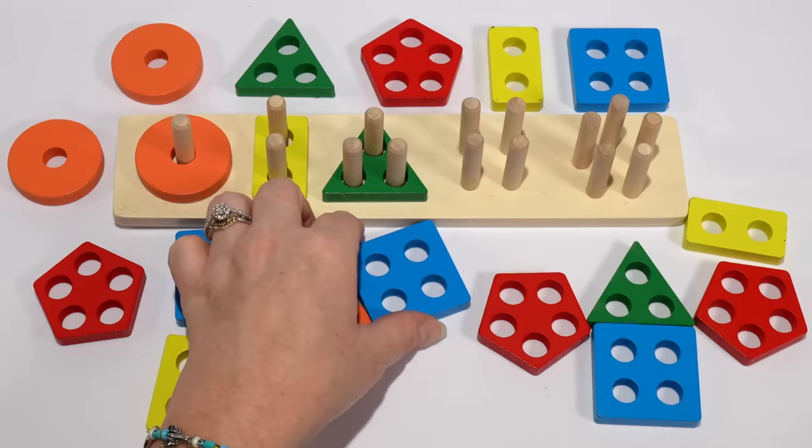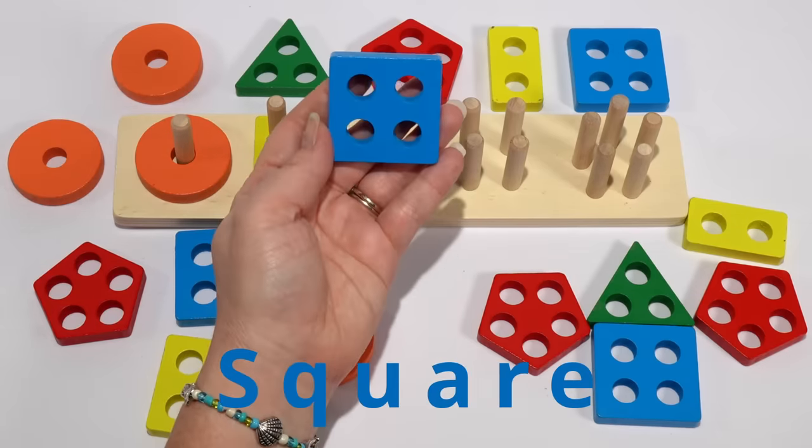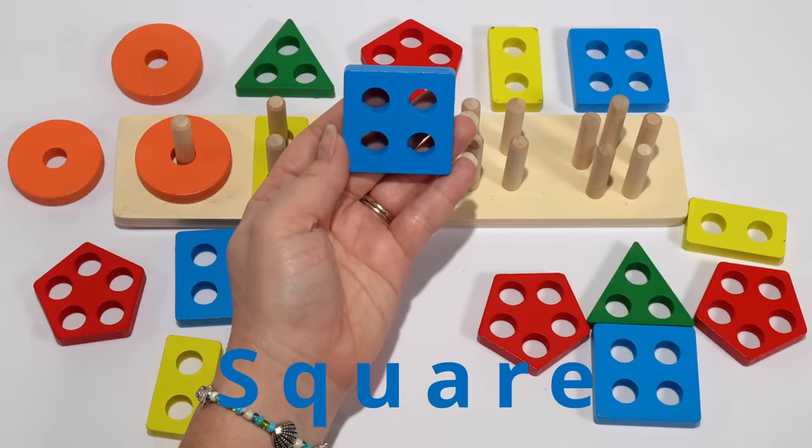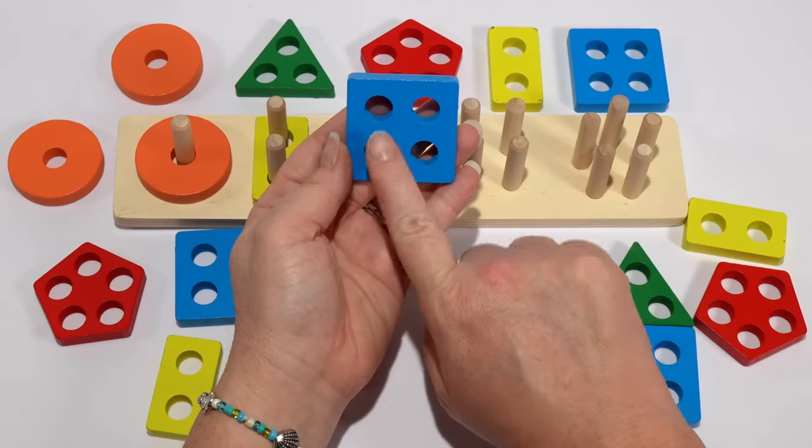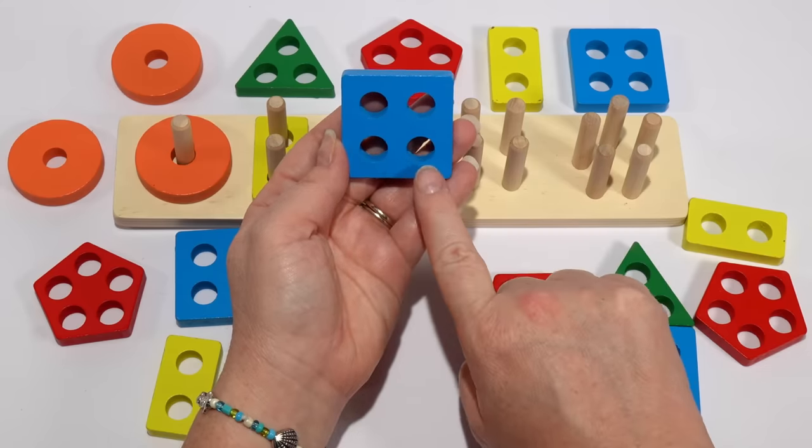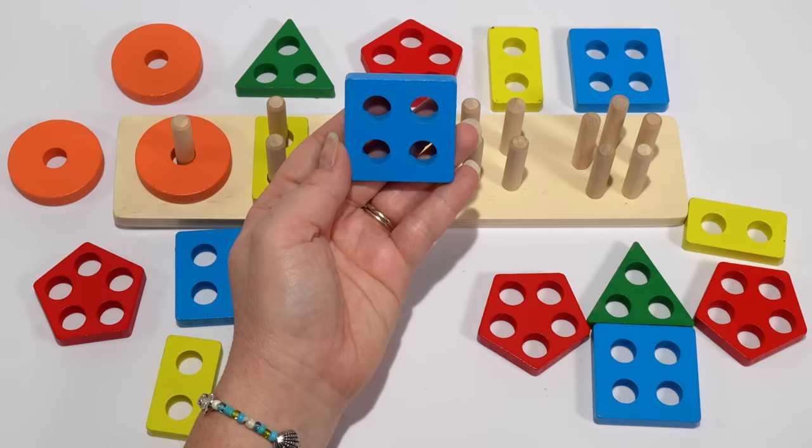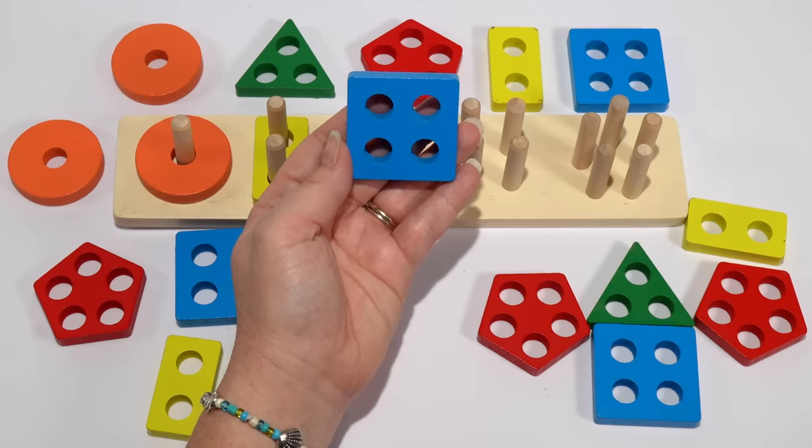So it must be our square. Our square has four holes. One, two, three, four. And our square is blue.